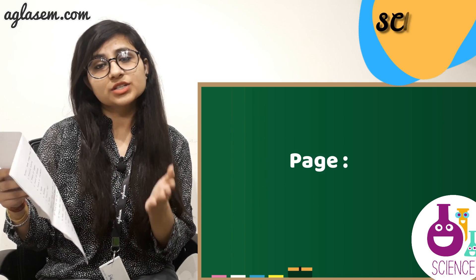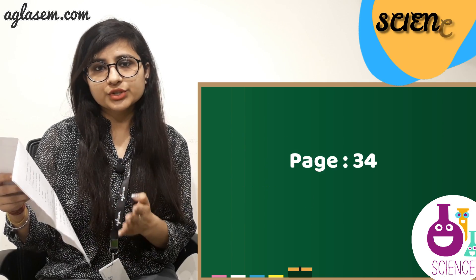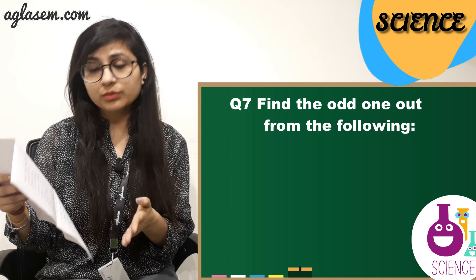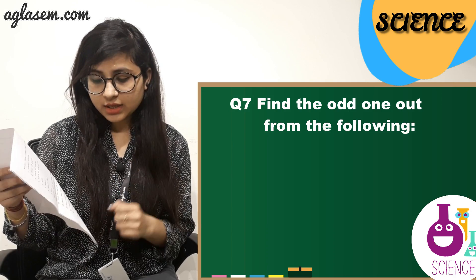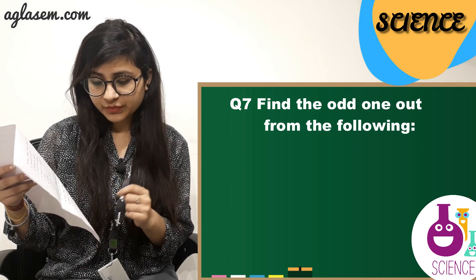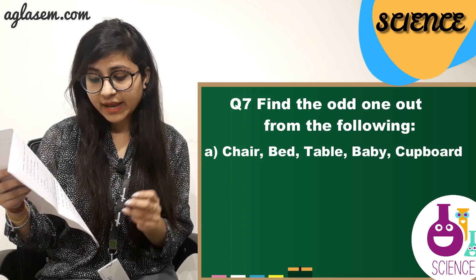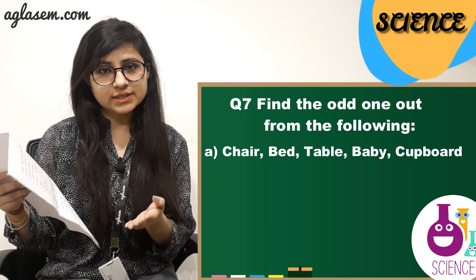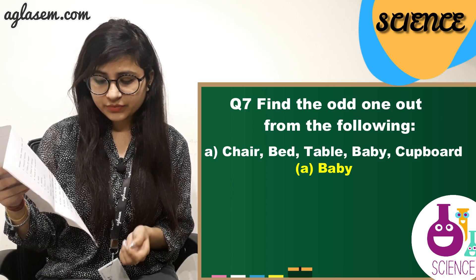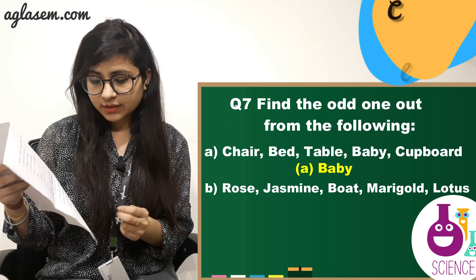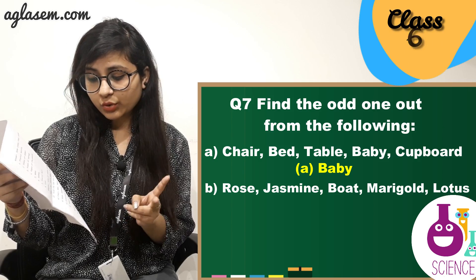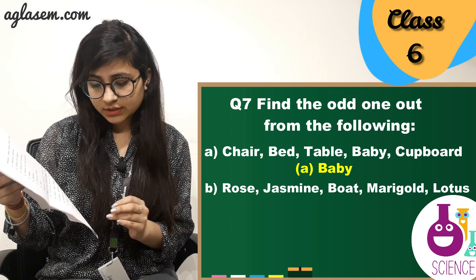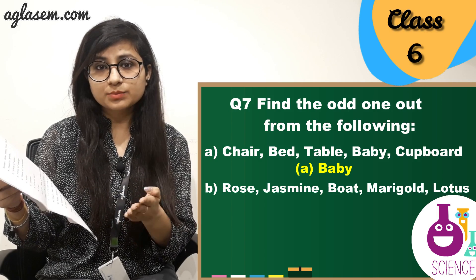Turn your page number 34. Question number 7. Find the odd one out from the following. A. Chair, bed, table, baby, cupboard — the answer is baby. B. Rose, jasmine, boat, marigold, and lotus — the answer is boat.